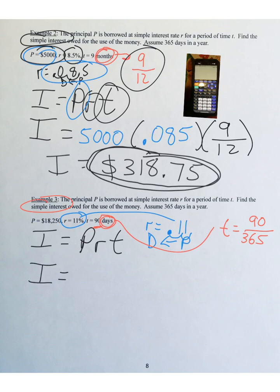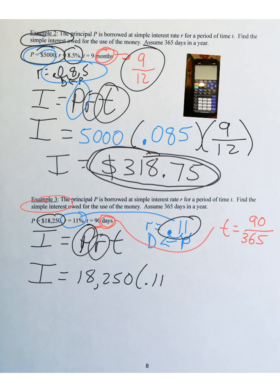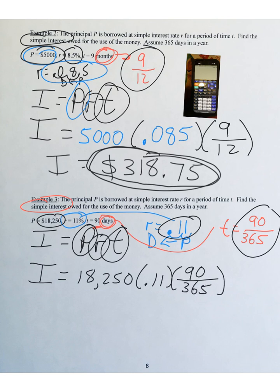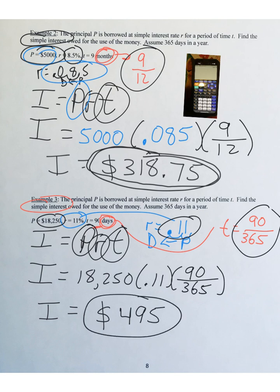Plugging in: I equals 18,250 times .11 times 90/365. You don't have to reduce the fraction — just plug it into the calculator as is. When you type in 18,250 times .11 times 90 divided by 365, you should get $495 as the final answer for interest. Go ahead and try it on your calculator to verify.